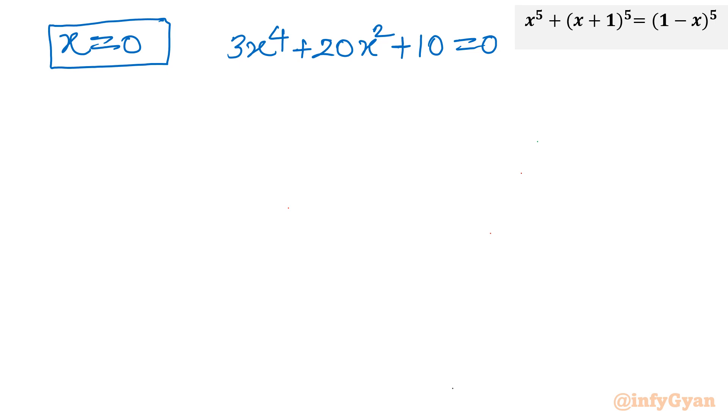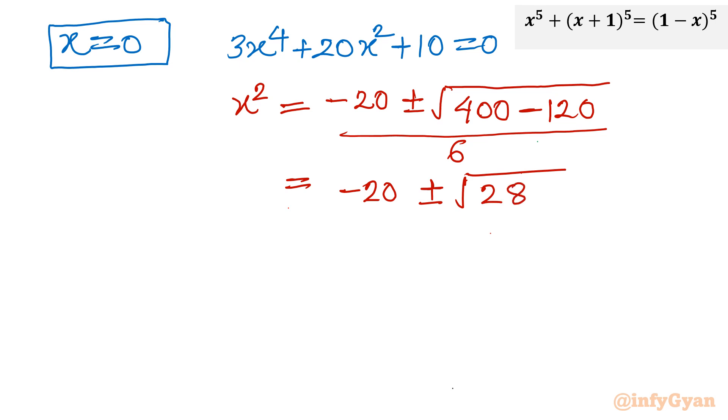So let me consider quadratic in x square so that calculation would be easier. x square is equal to minus b, so minus 20, plus minus under the root b square, so 20 square is 400, minus 4ac, 40 times 3, 120, divided by 2a, so 6. Minus 20 plus minus, this will give us 280 over 6. Now we know that 280 is 70 times 4. So this 4 will come outside of the square root with 2. So plus minus 2 root 70 over 6, or minus 10 plus minus root 70 over 3.